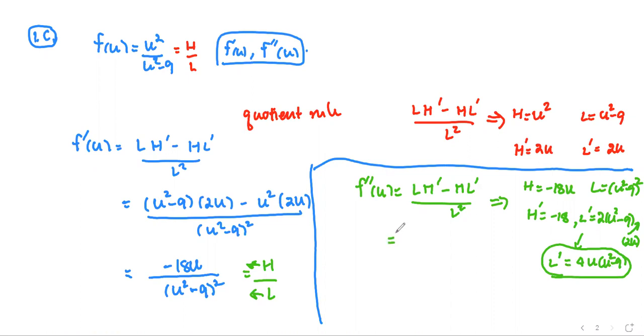We just bring everything back into the formula. The low, the quantity u squared minus 9 squared, the d-high, negative 18, subtracted by the high, which is negative 18u. And then the d-low is the quantity 4u times u squared minus 9, all divided by the quantity of the bottom squared, which is the square of the squared. We have more terms on the top. I'll let you simplify the top and then let me know what you get.